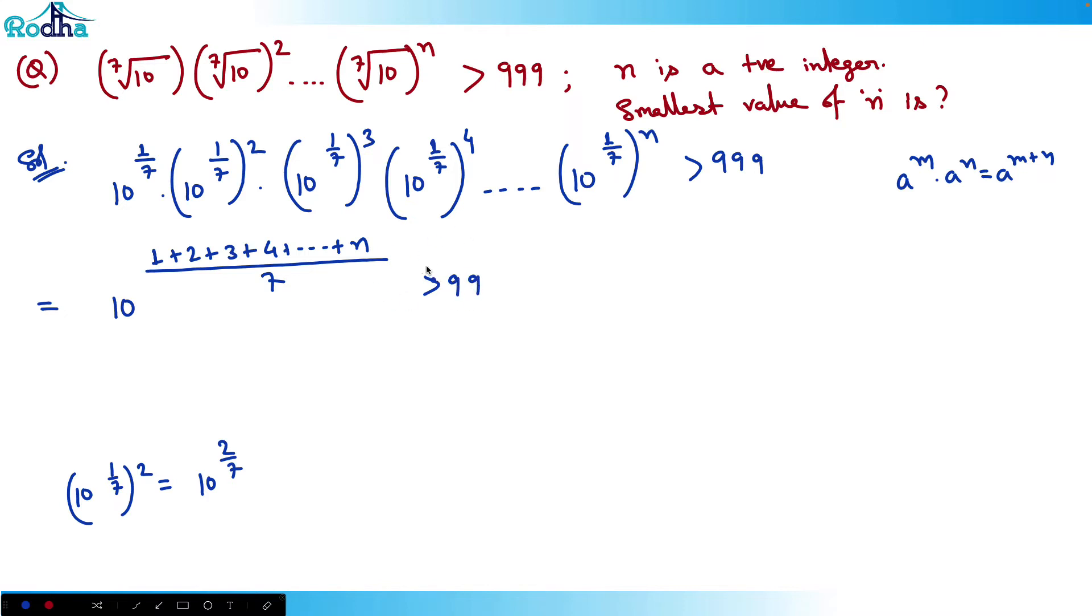Now you want the minimum value of n. For this to be minimum, 999 has to be an integer because it's 10 raised to something. Now 999 is almost 10^3 - for any other value it won't satisfy. So in this case, I can write it as almost 10^3.